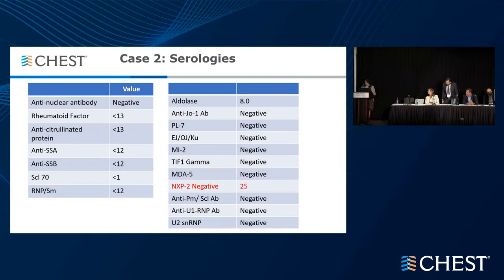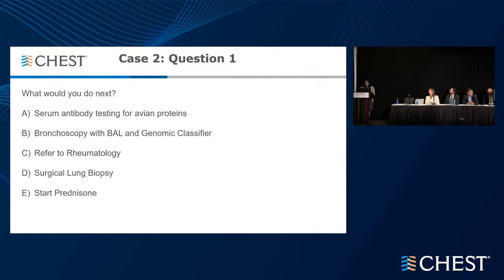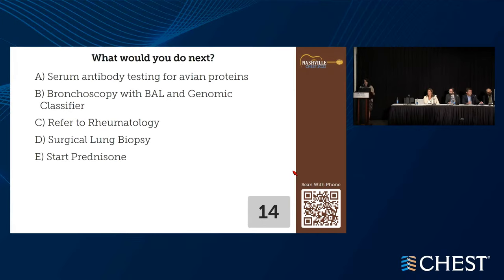After the CT scan, we did serologies as well. His NXB2 on his myositis panel was 25, which is mildly elevated, but everything else was negative. The question is: what would you do next? Would you do serum antibody testing for avian proteins, bronchoscopy with lavage and genomic classifier testing, refer to rheumatology, get a surgical lung biopsy, or start corticosteroids?